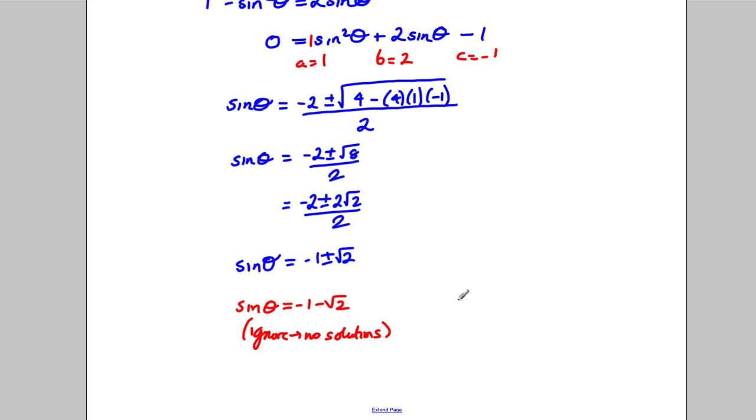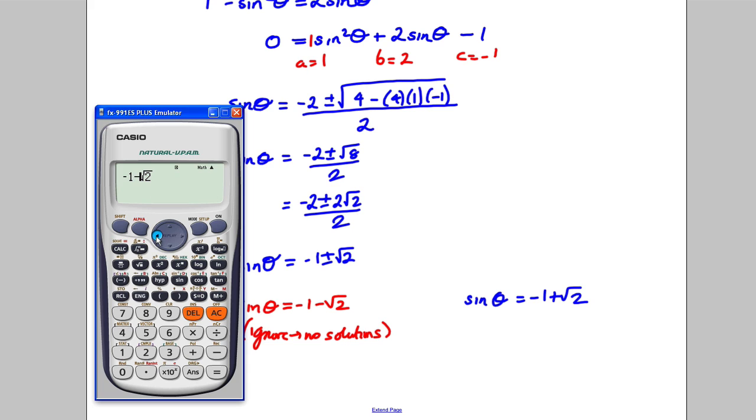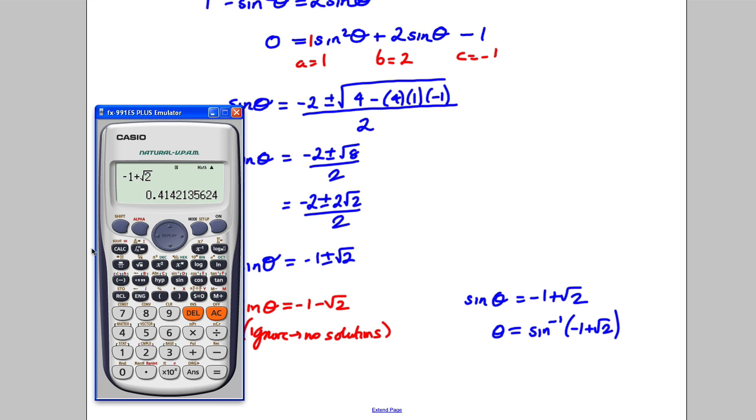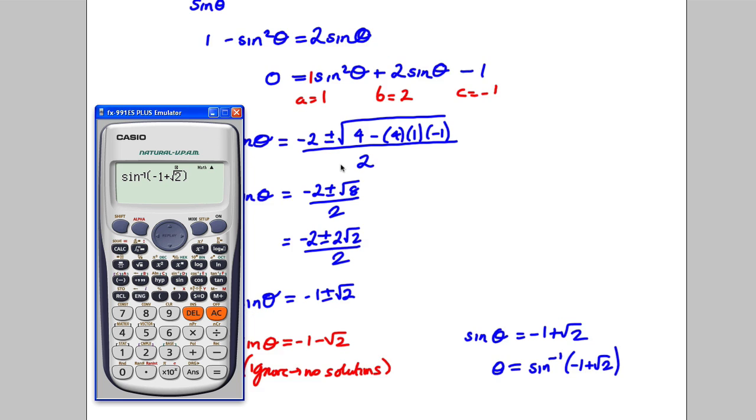However, you would get an answer for sin θ = -1 + √2 because -1 + √2 going back up here, change that to an add is 0.41. So you would get an answer. So θ is the inverse sine of -1 + √2, which I'm going to do inverse sine of -1 + √2 like that.